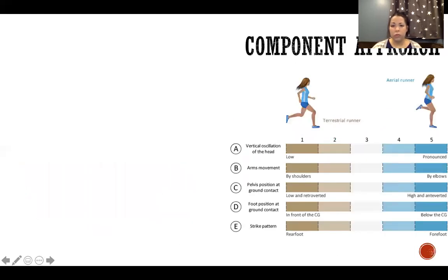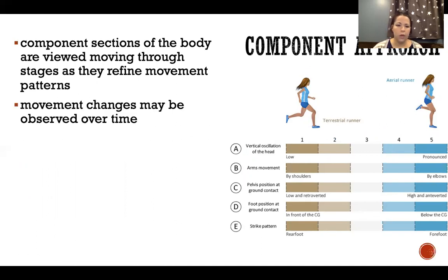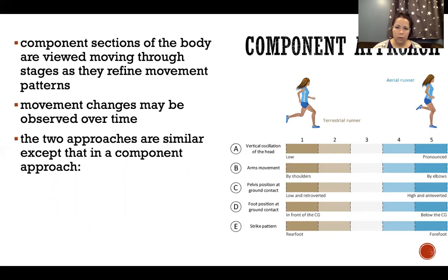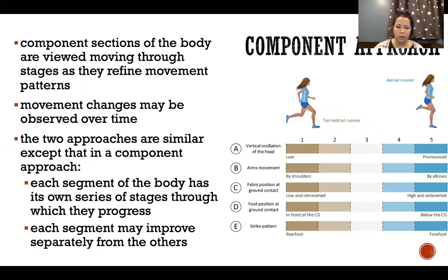The component approach is extremely similar, but the difference is that we break the body down into its parts and analyze how each part is moving and developing through the stages of learning. Component sections of the body are viewed moving through stages as they refine movement patterns, and just like with the composite approach, movement changes are observed over time. The difference is that with the component approach, each segment goes through its own series of stages and each segment can improve independently of the other segments.